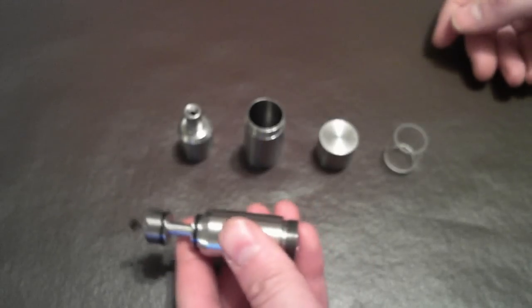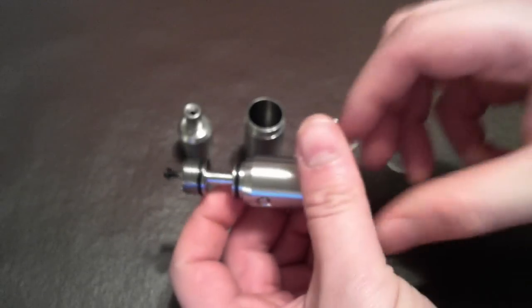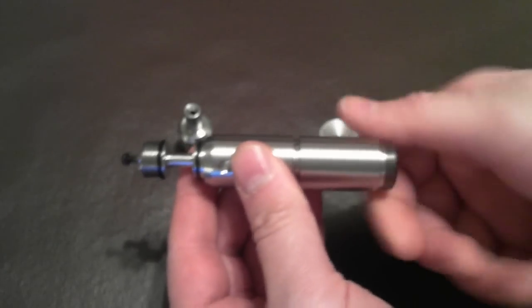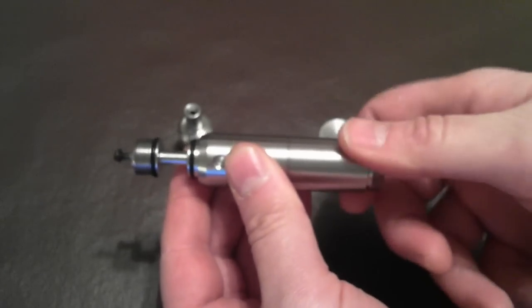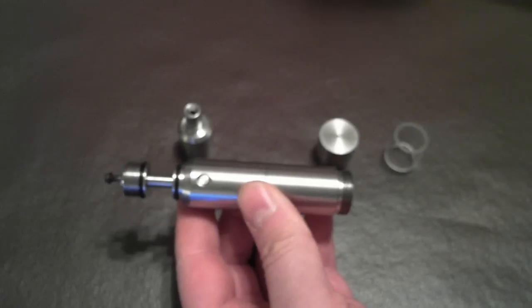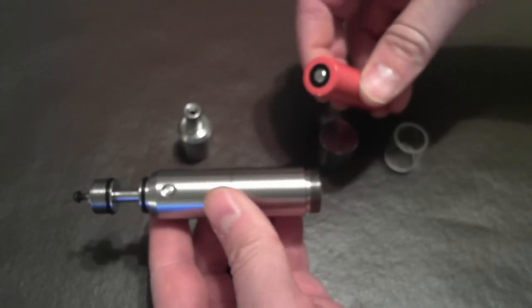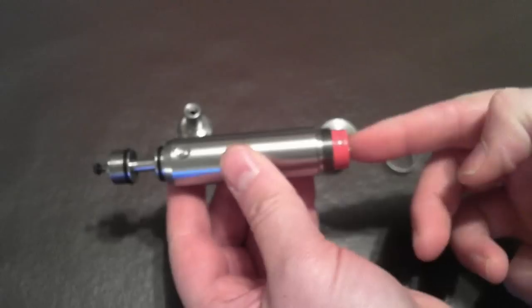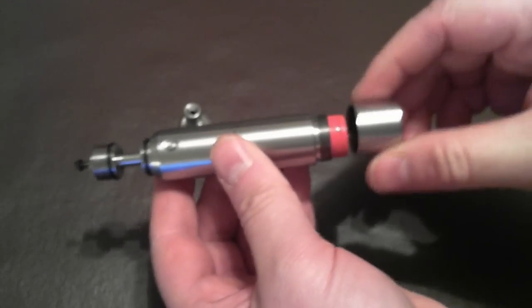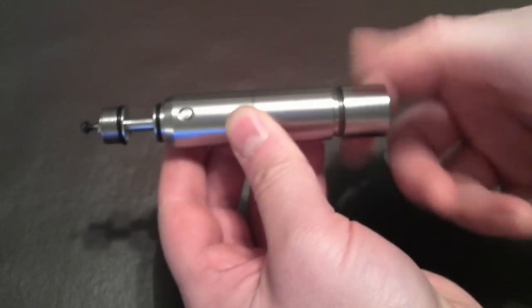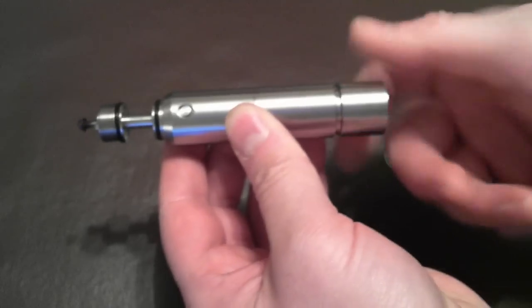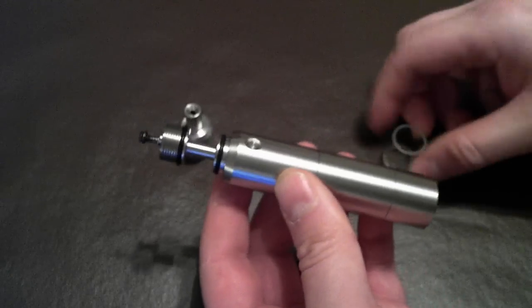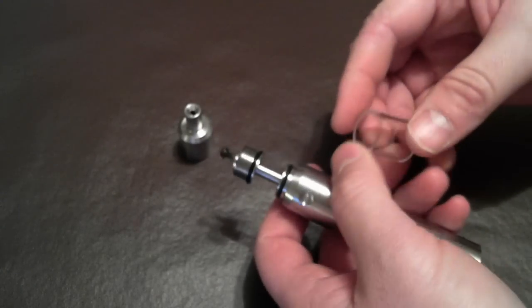It just screws on. Your 18650 battery with your positive post down, the negative going up, and then your bottom cap screws on nice and smoothly. Now I am going to put on this tank.